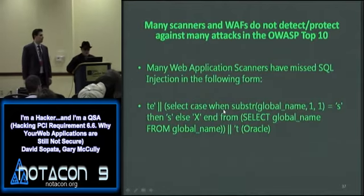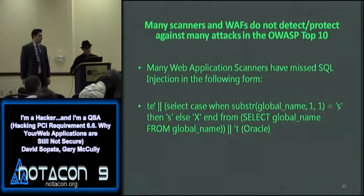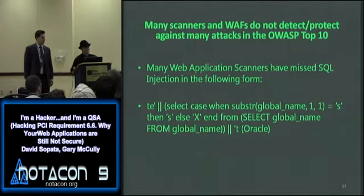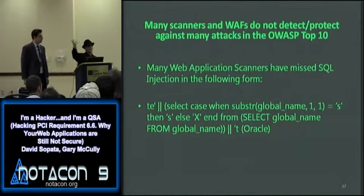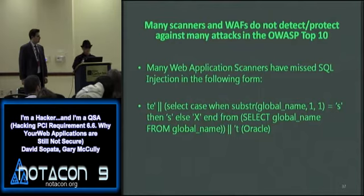Using string concatenation, I said: select the first character of the global_name from Oracle. If the first character equals 'S', return 'S' — completing the word 'test' — and I'd get 100 results back. If it's not 'S', return 'X' — making the word 'text' — and I'd get different results. Using a tool like Burp Intruder, you iterate through A to Z and look for the true condition. Web application firewalls also have a hard time with this signature. I originally found this in a DB2 vulnerability and have used it throughout the years.